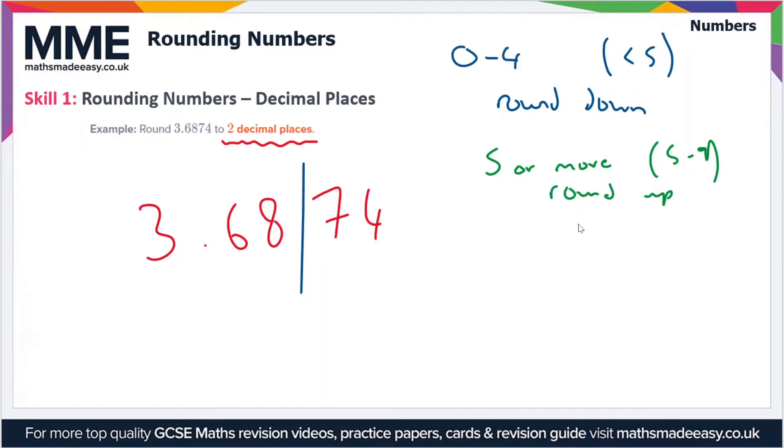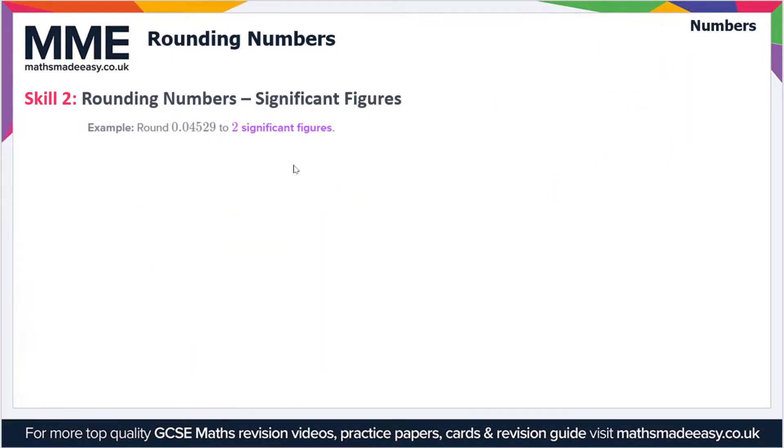So here we've got a 7 which is greater than 5, so we're going to have to round up. So we're left with 3.69. And that's pretty much all there is to it. Let's move on to significant figures.